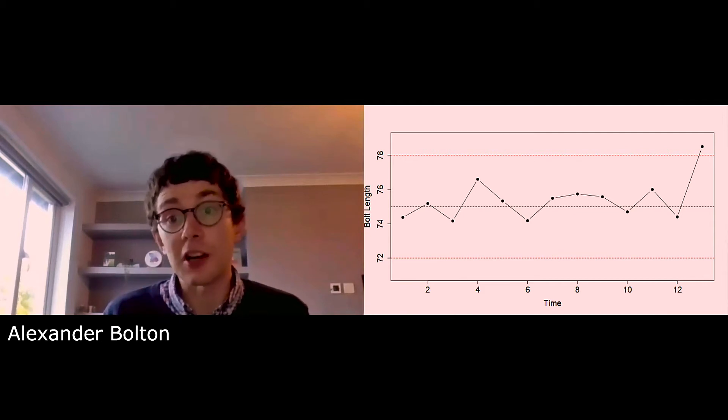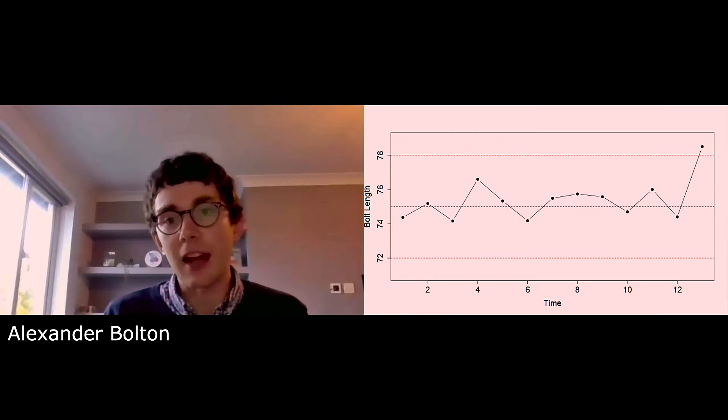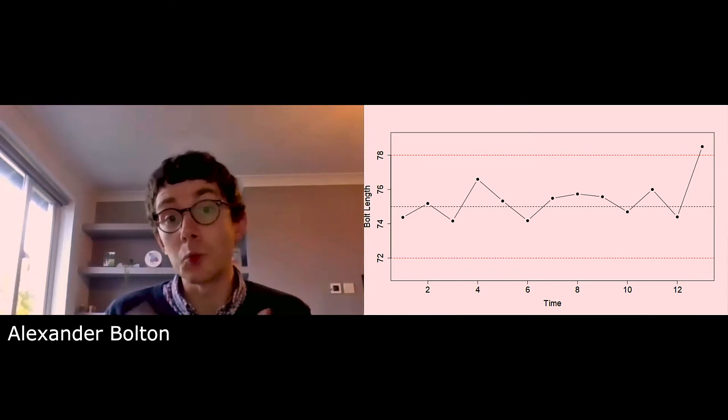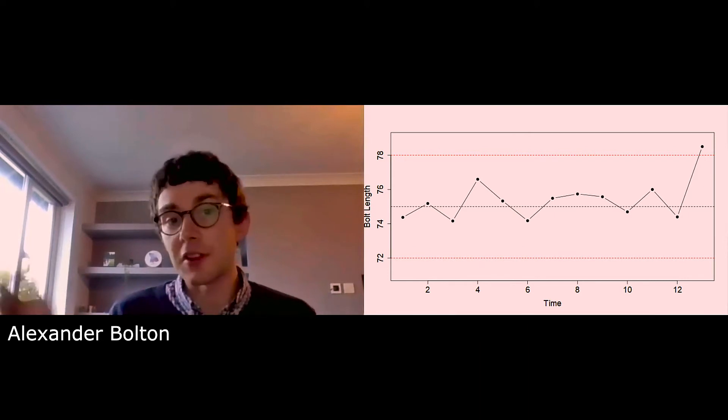The simplest rule is based on constructing a Shewhart chart: stop production if you see a length at least three standard deviations from the mean. The average number of bolts between false alarms would be 370, but it wouldn't have timely detection of a small change in the mean. The general inductive reasoning we want to apply is: once we start observing values that would be unlikely if the process was in control, and likely if it was out of control, we trigger an alarm.